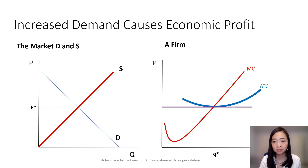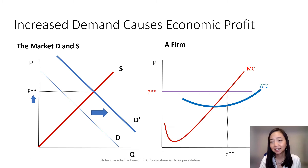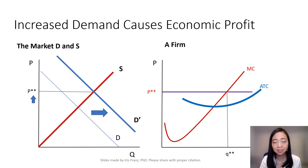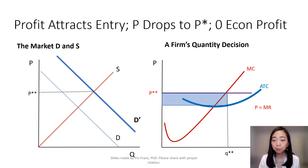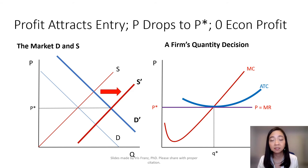Now suppose there is an increase in market demand, which will shift our demand curve to the right. As a result, price goes up from P* to P**. That will increase the marginal revenue of our firm, so the firm is going to equate the new price and the marginal cost and produce a higher quantity, resulting in a positive economic profit — shown as the blue shaded area. This economic profit will attract new firms to enter the market, shifting market supply to the right, which will bring the price back down to P*. As a result, existing firms will be making a zero economic profit again.